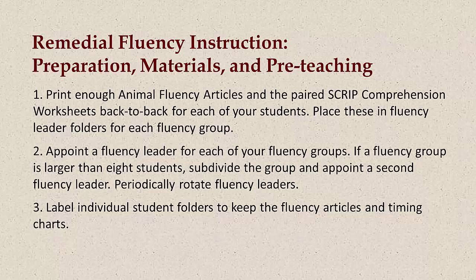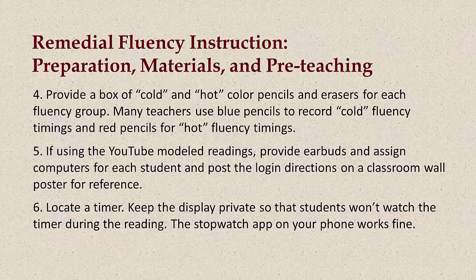Appoint a fluency leader for each of your fluency groups. If a fluency group is larger than eight students, subdivide the group and appoint a second fluency leader. Periodically rotate fluency leaders. Label individual student folders to keep the fluency articles and timing charts. Provide a box of cold and hot color pencils and erasers for each fluency group. Many teachers use blue pencils to record cold fluency timings and red pencils for hot fluency timings. If using the YouTube modeled readings, provide earbuds and assign computers for each student and post the login directions on a classroom wall poster for reference. Locate a timer. Keep the display private so that students won't watch the timer during the reading. The stopwatch app on your phone works just fine.